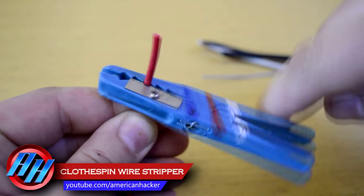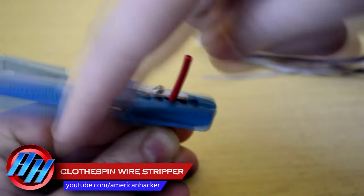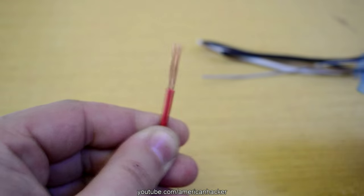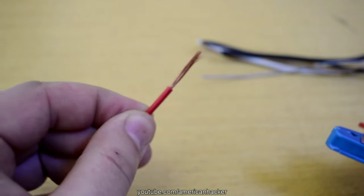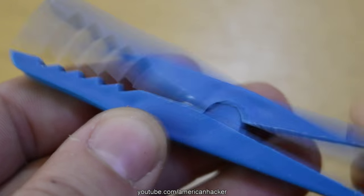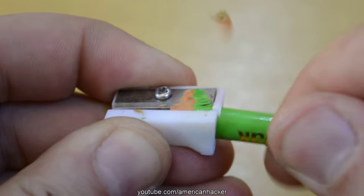This homemade wire stripper is made from household items and it works great. For making this simple wire stripper, you will need just a clothespin and pen sharpener.